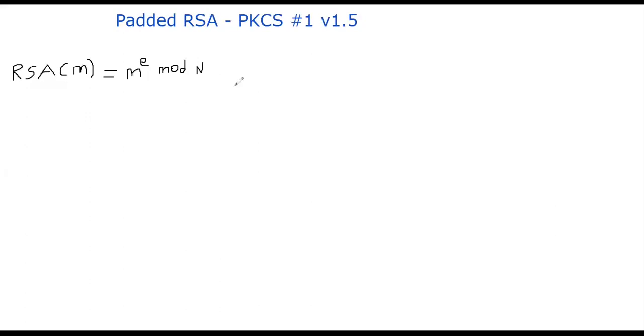First, let's recall RSA is a function mapping an element m to m power e mod n. e and n are public parameters. This is the function that we have been studying for quite some time.